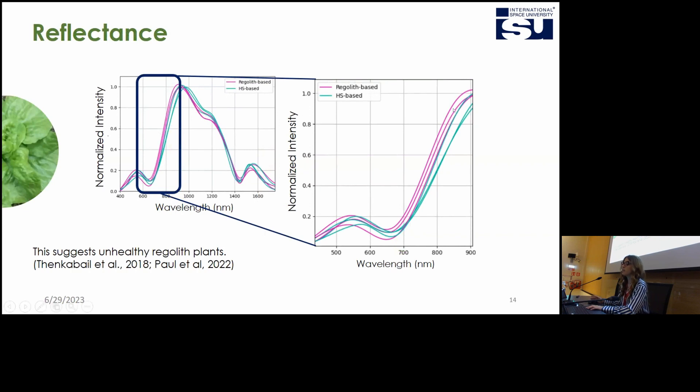I have three spectra from the regolith-based plants in pink and the hydroponic system in blue. We can see that the regolith plants have a blue shift, a shift toward blue wavelengths. This means that this is often associated to the presence of metals in the plants, and therefore associated to less healthy plants.